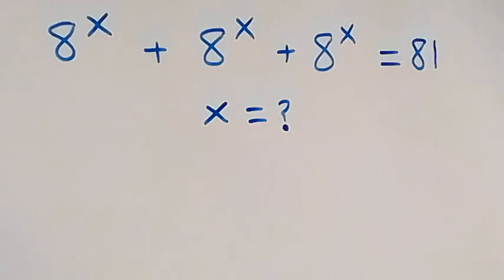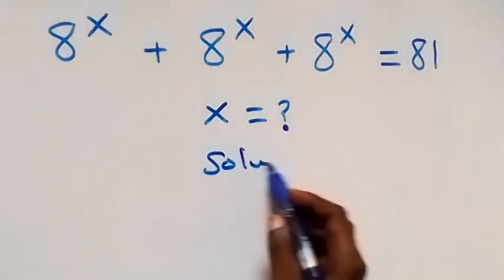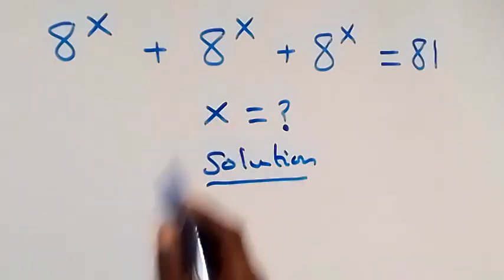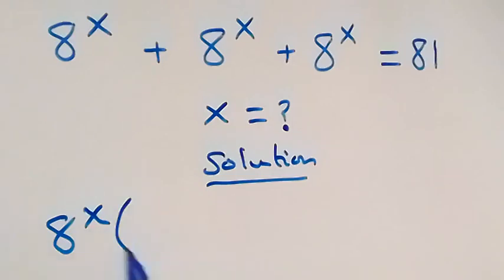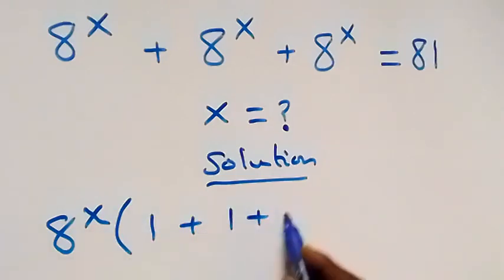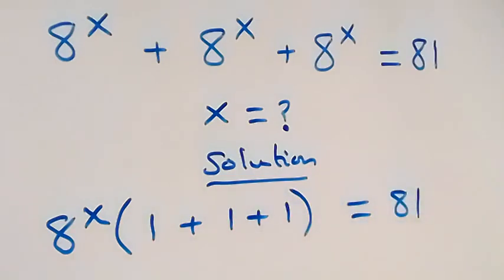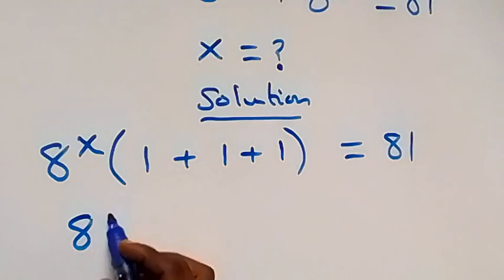Hello, you are welcome. How to solve for x in this exponential equation. From what is given, let's factor out 8 raised to the power x, and we have 8 raised to power x in brackets: 1 plus 1 plus 1, which equals 81.